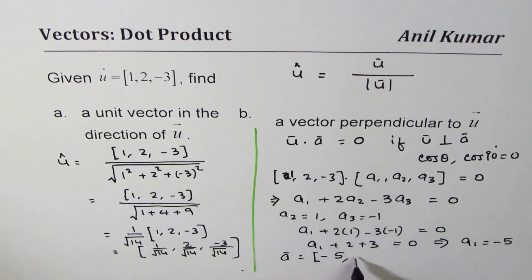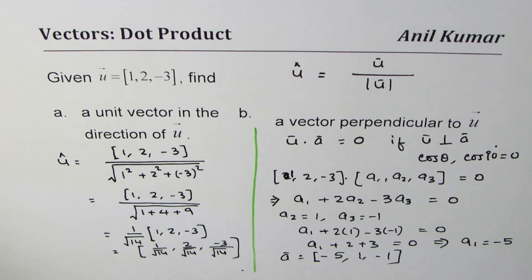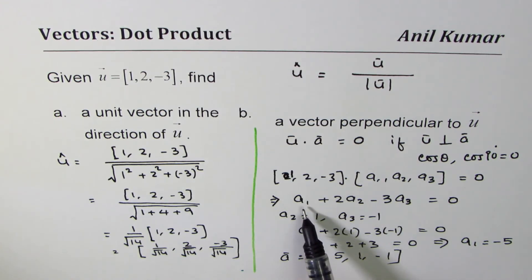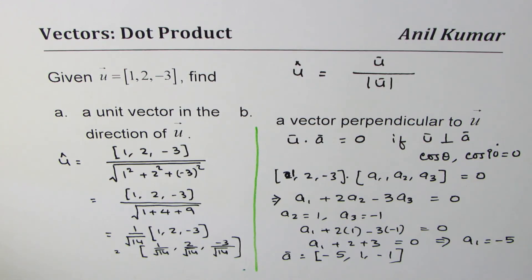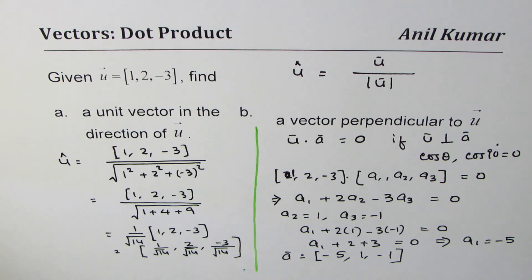You can find an infinite number of combinations like this. For example, if a2 = 0 and a3 = 1, the answer will be -2 for a1, and likewise you can calculate more. That is how we can find many vectors perpendicular to a given vector in R3. I'm Anil Kumar — I hope you understand the strategy for finding a unit vector and a vector perpendicular to a given vector. Thank you and all the best.